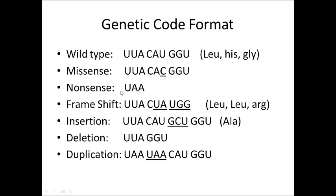Now let's talk about the nonsense mutation in genetic code. A nonsense mutation is where you insert an early stop codon — remember, UGA, UAA, UAG — and they don't encode for any amino acid. In this example, we have UUA in the normal sequence, but a mutation changes the middle U to an A, giving us UAA, which is one of our stop codons. The body says stop reading — no more amino acids are added to this chain. Everything downstream will be wiped out. Nonsense mutations are very damaging to the body.